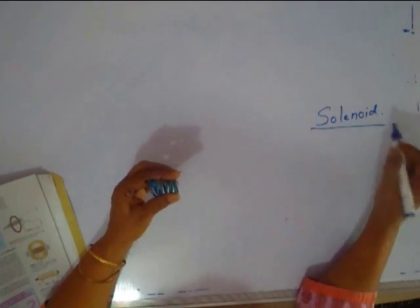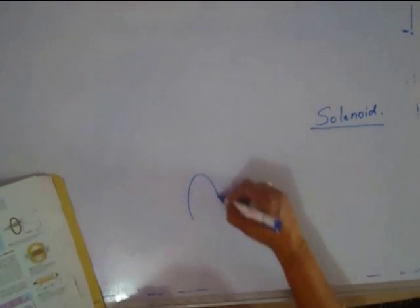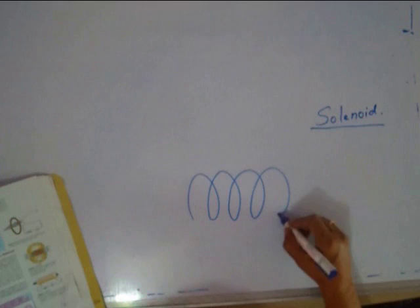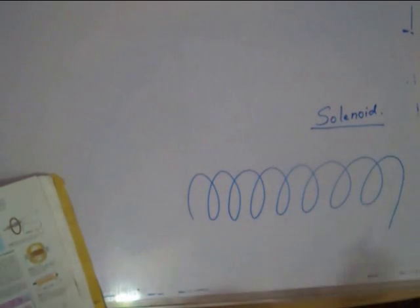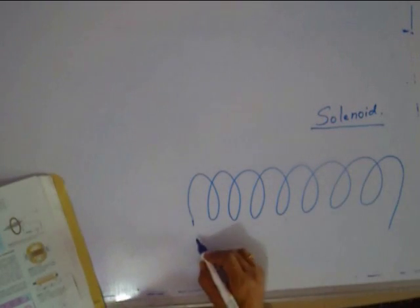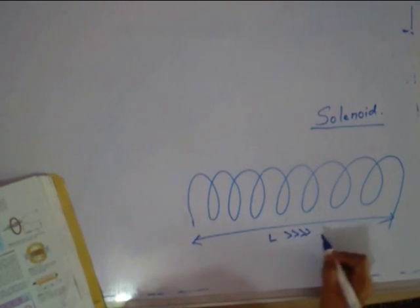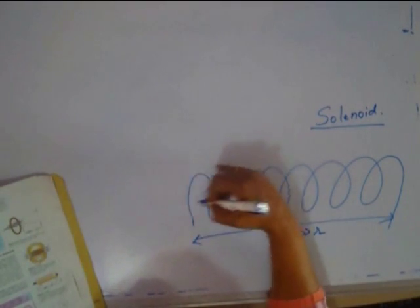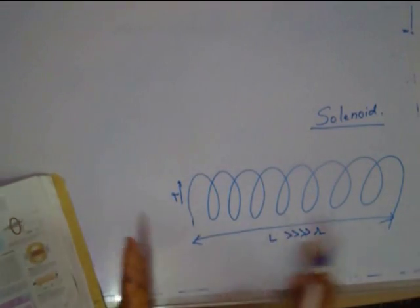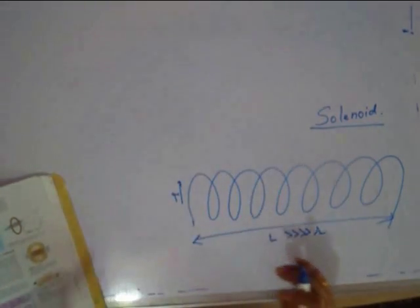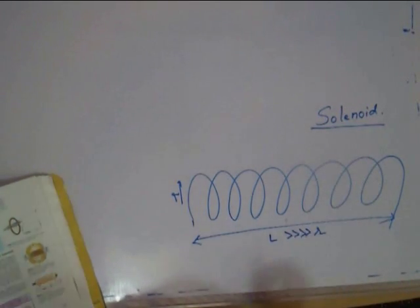What is a solenoid? Solenoid is a long coil of insulated conducting material, long such that its length is very large compared to the radius, you pick up any circle and this would be the radius. If the length is very large compared to the radius, then all the effects that we will discuss just now will hold true, and this will be called as a solenoid.